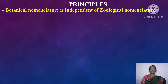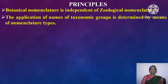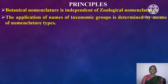The code is divided into three parts: principles, rules and recommendations. These principles form the basis for botanical nomenclature. The six principles are: first, botanical nomenclature is independent of zoological nomenclature — botanical nomenclature is different from zoological nomenclature. Second, the application of names of a taxonomic group is determined by means of nomenclature type, meaning a set nomenclature type must be followed while naming any plant species.